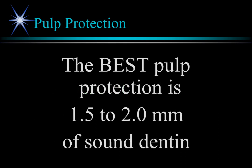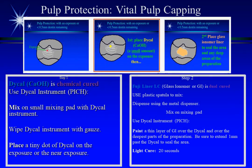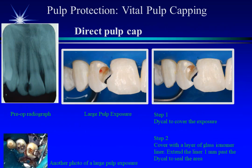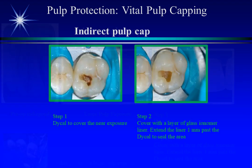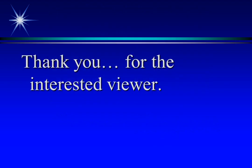Remember: if you have 1.5 mm or more of sound dentin thickness, you have good pulp protection. Please review the procedures for pulp protection. Thank you — check out some other videos for the interested viewer.